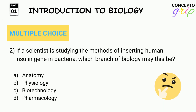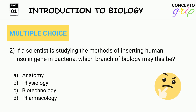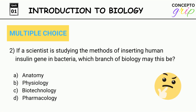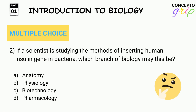Question 2. If a scientist is studying the methods of inserting human insulin gene in bacteria, which branch of biology may this be? A. Anatomy, B. Physiology, C. Biotechnology, D. Pharmacology. Correct option is C. Biotechnology.